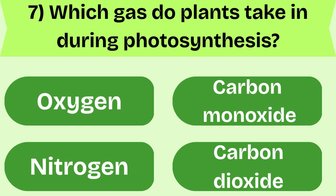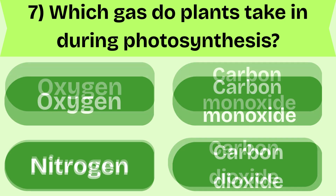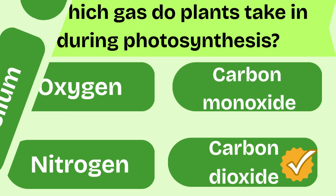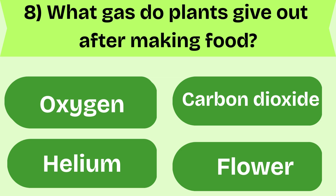Which gas do plants take in during photosynthesis? Carbon dioxide. Superb. Here comes the next one. What gas do plants give out after making food? Oxygen. Excellent. Try the next one.